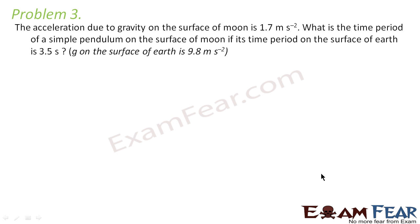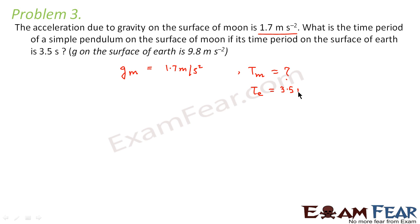Now let us look at problem 3. The acceleration due to gravity on the surface of the moon is 1.7 m/s². What is the time period of a simple pendulum on the surface of the moon if its time period on the surface of the earth is 3.5 seconds? The value of g on the surface of the earth is 9.8 m/s². We need to find the time period on the moon, Tm.